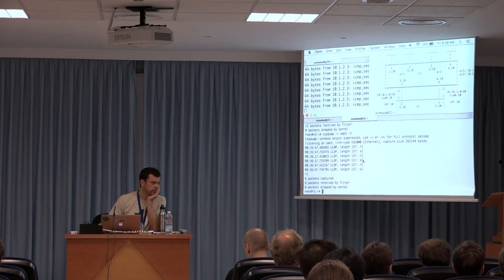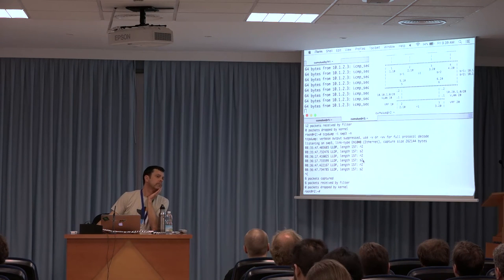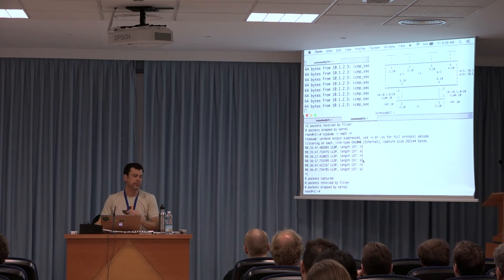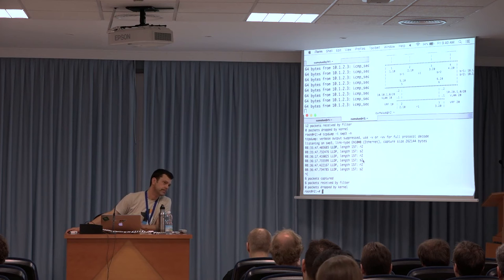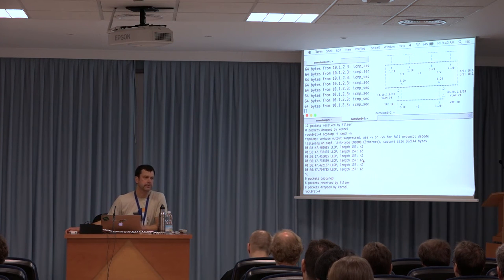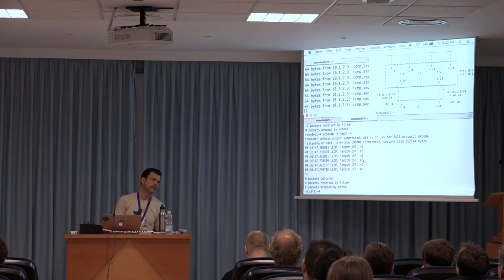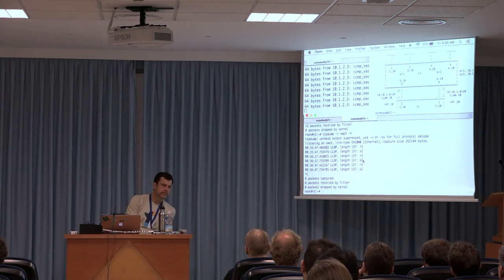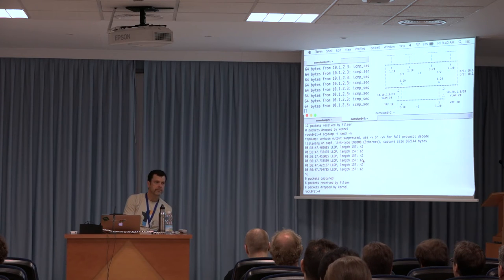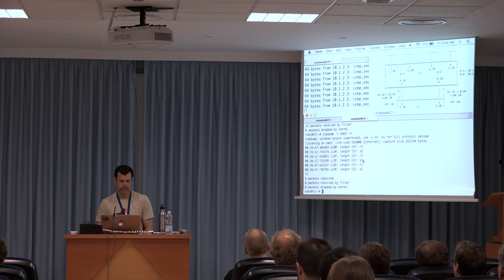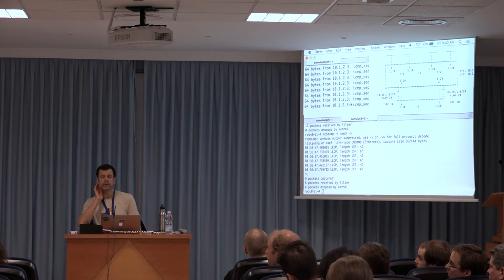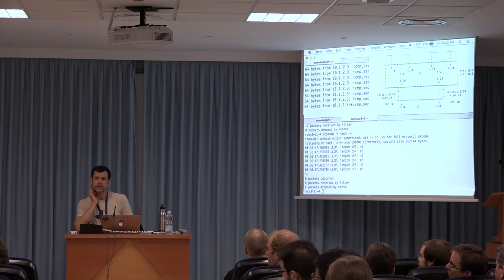Question: how does this integrate with iptables? You could put iptables rules on the VRF device. Right now on ingress you lose visibility to the original ingress device. There are thoughts on how to fix that so you could put iptables rules on ingress devices as well as on the VRF aggregate device.